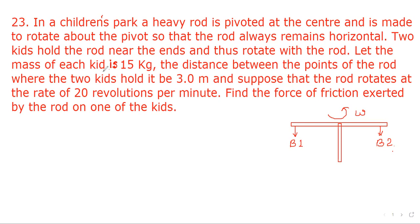The mass of each kid is 15 kg. The distance between the point of the rod where the two kids hold it is 3 meters, and the rod rotates at the rate of 20 revolutions per minute. Find the force of friction exerted by the rod on one of the kids.